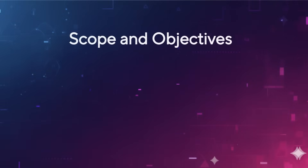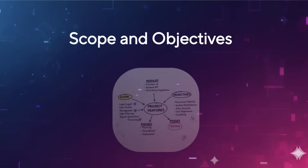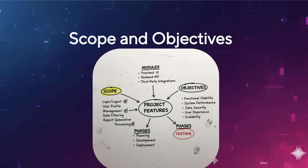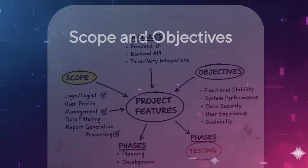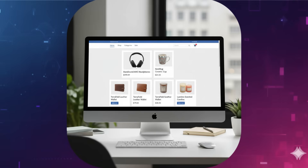Let's start with scope and objectives. This is perhaps the most critical part. You need to define what will be tested — specific features, modules, integrations — and what you aim to achieve through testing. Imagine you're building an e-commerce website. Your scope might include the product catalogue, shopping cart and payment gateway.